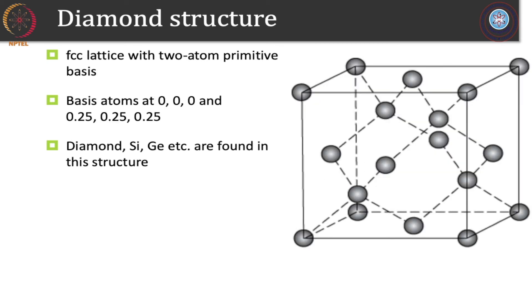Now let's look at the diamond structure. It is a face-centered cubic structure, but unlike the sodium chloride structure, the second atom in the basis is at (1/4, 1/4, 1/4) rather than the body center. The basis has one atom at (0, 0, 0) and the other at (0.25, 0.25, 0.25). Diamond, silicon, and germanium — important semiconducting materials — are found in this structure. This structure is very stable, as demonstrated by how strong diamond is as a material.